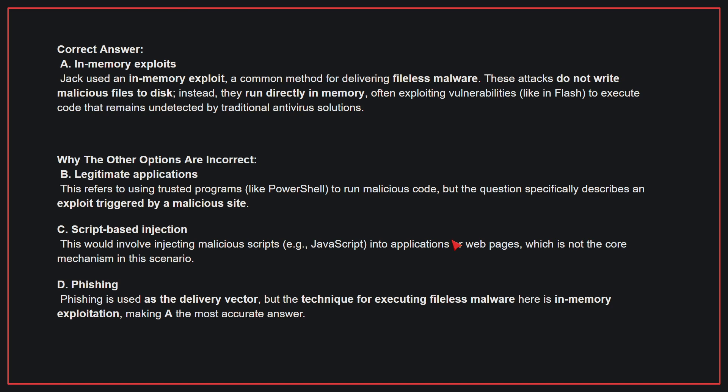Why the other options are incorrect: B, legitimate applications — this refers to using trusted programs to run malicious code, but the question specifically describes an exploit triggered by a malicious site. C, script-based injection — this would involve injecting malicious scripts into applications or webpages, which is not the core mechanism in this scenario. D, phishing — phishing is used as the delivery vector, but the technique for executing fileless malware here is in-memory exploitation, making A the most accurate answer. Therefore, the correct answer is A.